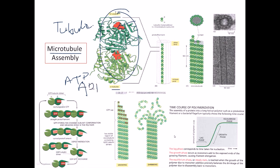When the tubulin dimer attaches with ATP, the ATP-beta-tubulin dimer is active. These dimers come in and attach with each other, arranging themselves one by one in a linear structure. These linear structures come together to form a sheet, and when you fold this sheet, you get a three-dimensional tube-like structure - the microtubule.